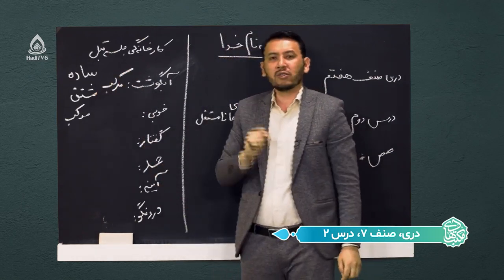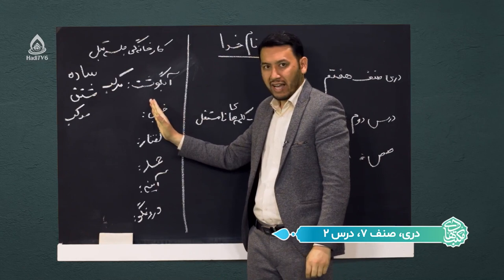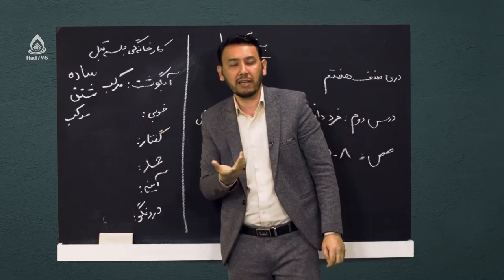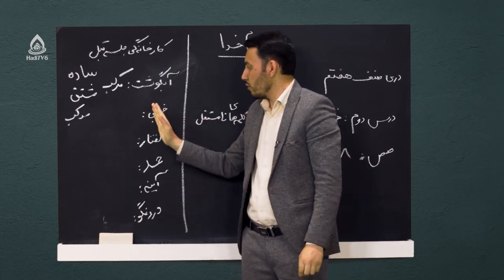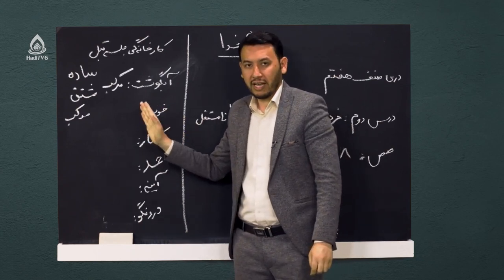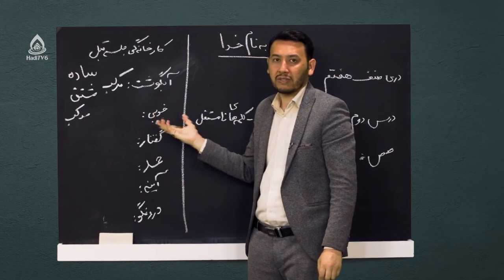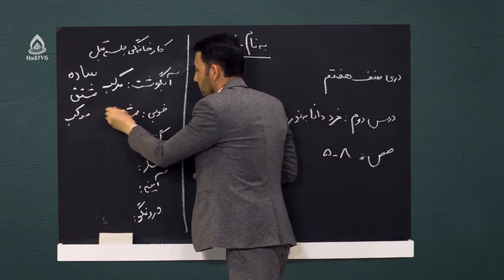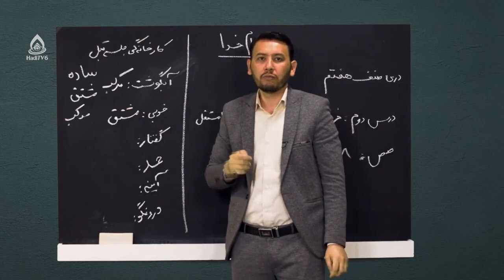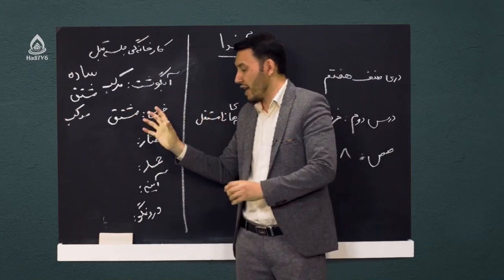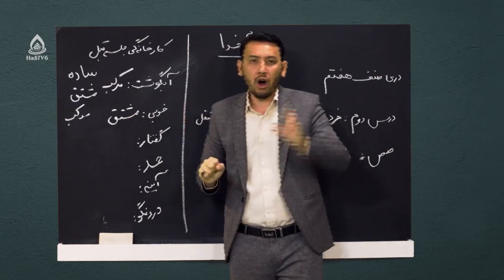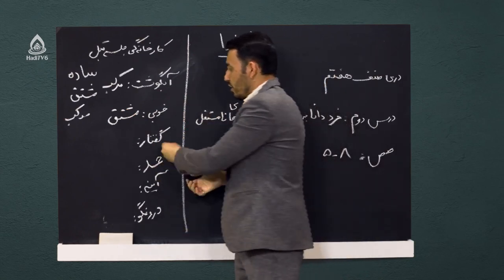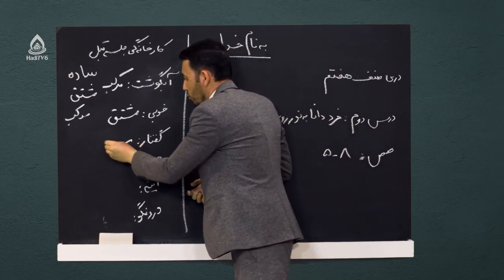خوبی: اجزای خوبی چیست؟ خوب یک جزء معنادار است، و «ی» که به آن چسبیده یک جزء فاقد معنی است. یعنی یک جزء معنادار با یک جزء بی‌معنا ترکیب شده، پس مشتق است. کلمه بعدی گفتار: گفت یک جزء معنادار است، «ار» یک جزء بی‌معنا است، در کنار هم ترکیب شده و گفتار شده که باز هم مشتق است.